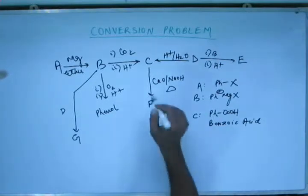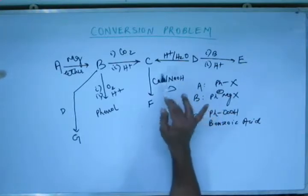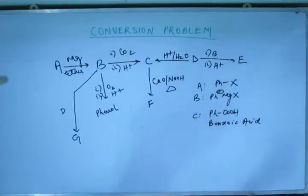Now from C to F if you look around, now this reagent, this CaO, NaOH and delta, this reagent is the reagent for soda-lime decarboxylation of any carboxylic acid. Now this reaction we studied when we studied hydrocarbons particularly when we studied alkanes. This was one of the methods of preparation of alkanes.